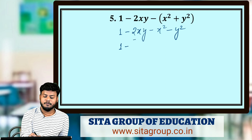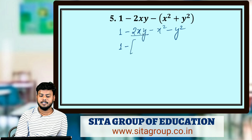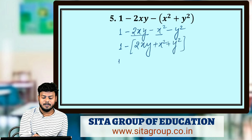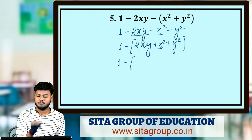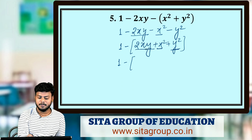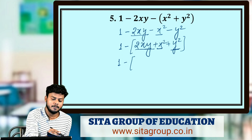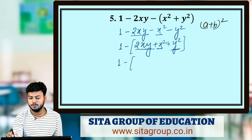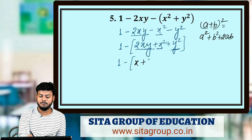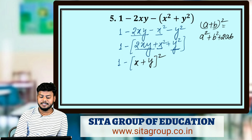Take minus common from -x² + y² - 2xy: this gives -(x² - y² + 2xy), or more precisely 1 minus (x² - 2xy... wait — rearranging: x² + y² + 2xy matches (a + b)² with a = x and b = y. So the inner expression becomes (x + y)². The expression is now 1 - (x + y)².